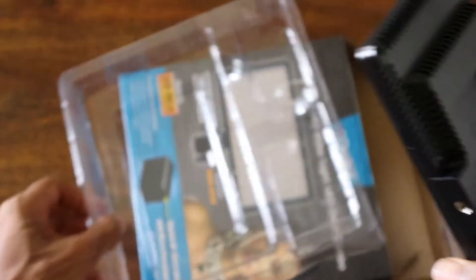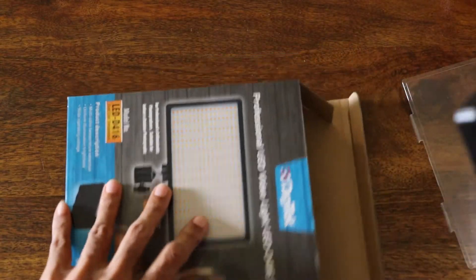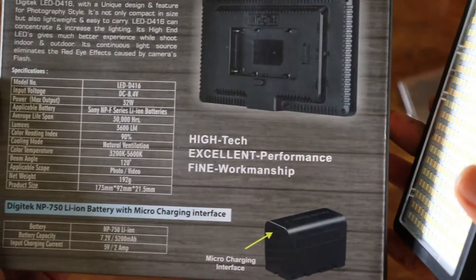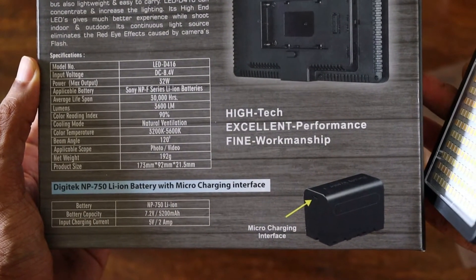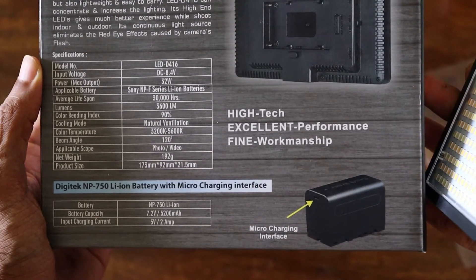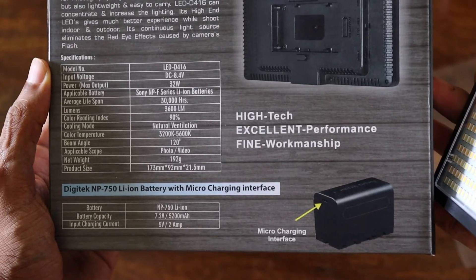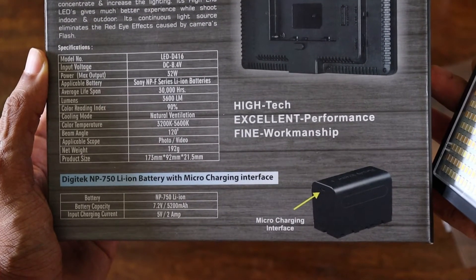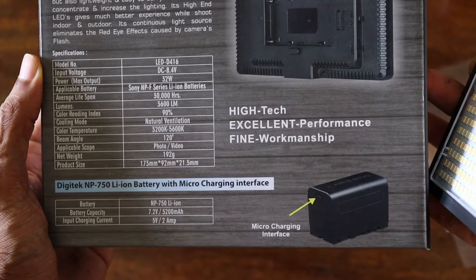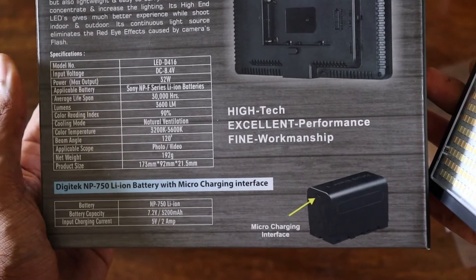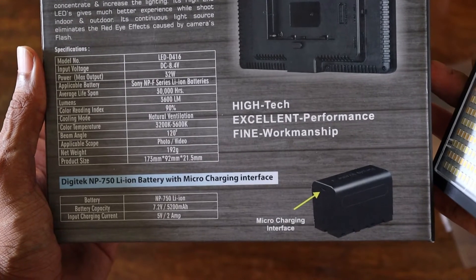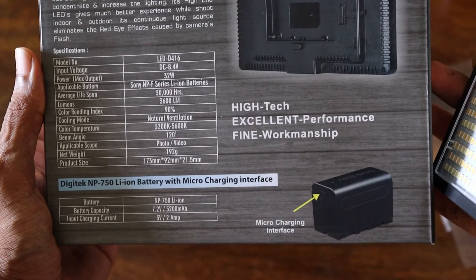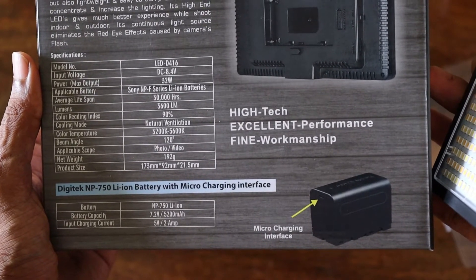Let's read some specs of this light. 32 Watt max output power, 30,000 hours expected lifespan. Gives out 3600 lumens of light with a CRI of 90%. 3200 K to 5600 K color temperature.